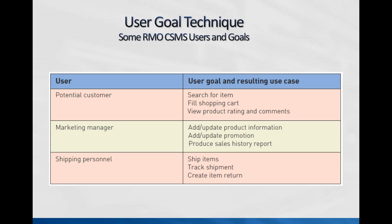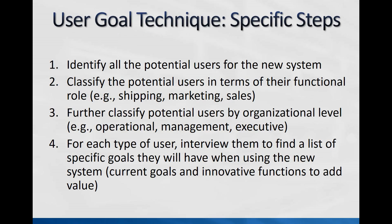When we think about these from different personnel at RMO — a customer or potential customer — what things do they do? If I go to Amazon, I search for an item, fill a shopping cart, and view product ratings and rankings to decide which product to buy. Amazon even lets you filter by four out of five stars. The shipping personnel ship items, track shipments, and create item returns.